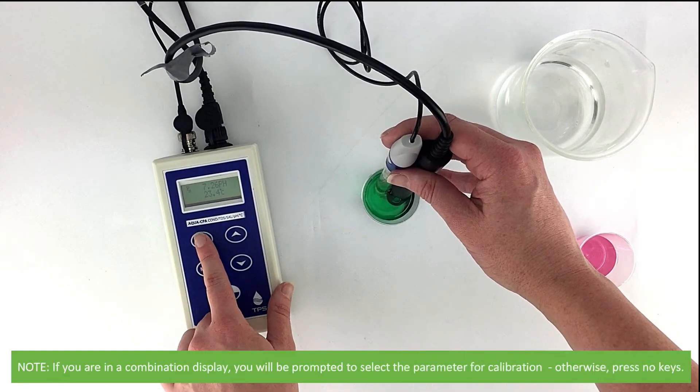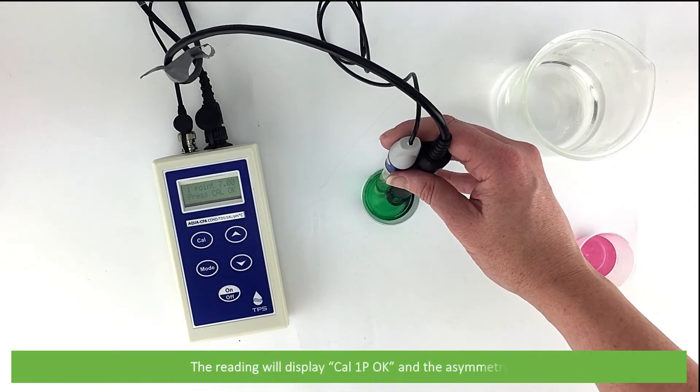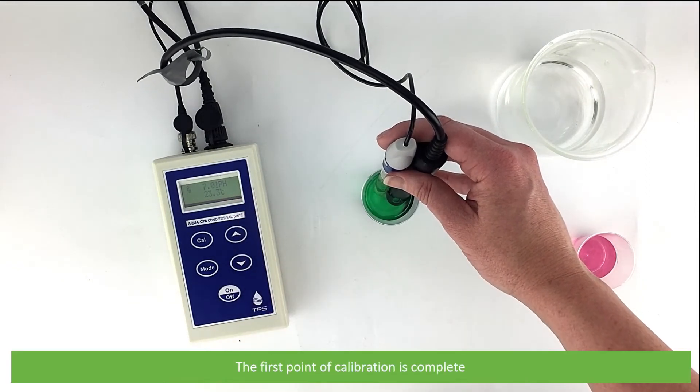If you are in a combination display, you will be prompted to select the parameter for calibration. Otherwise, press no keys. The reading will display CAL 1P OK and the asymmetry. The first point of calibration is complete.